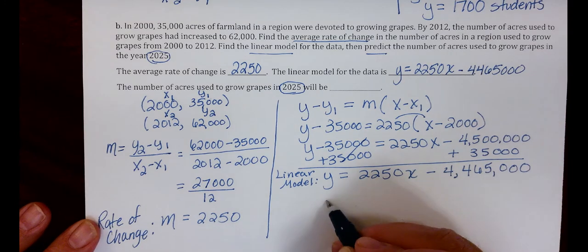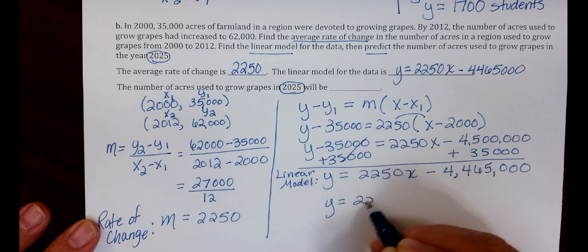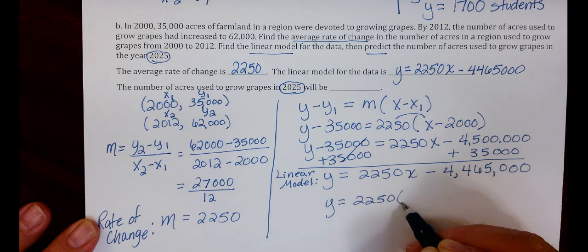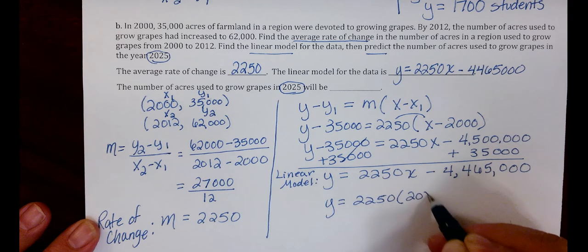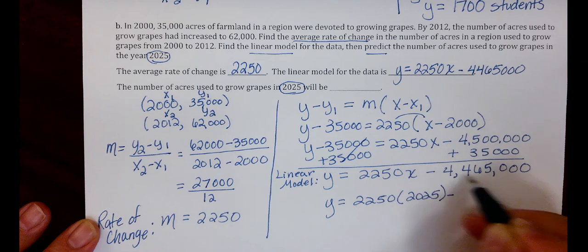I have Y equals 2,250 times 2025 minus 4,465,000.